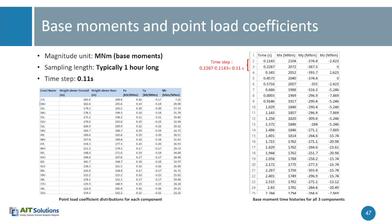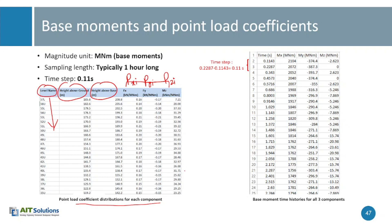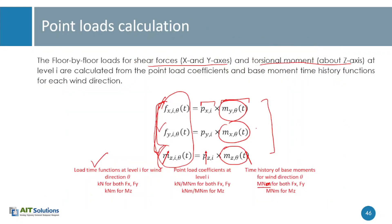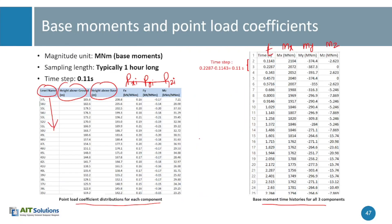Here is one example from sample results — you have all of these stories, the level number, height above ground, and height above base. These three columns are the point load coefficients: p_xi, p_yi, and p_zi, showing the point load coefficient distribution for each component. You also have the base moment histories: time versus M_x at base, M_y at base, and M_z at base. You apply those three equations to convert the base moments to story forces and finally get the dynamic story forces for each story.